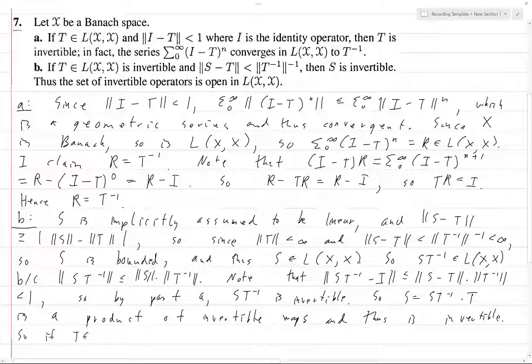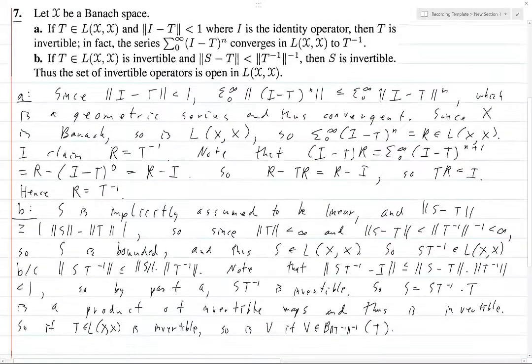So if T in L(X,X) is invertible, so is... let's see here, what do I want to call it? Q, R, S, T, U... so is V if V is in this ball of radius norm of T inverse inverse of T. I have to scroll down a little. Alright.